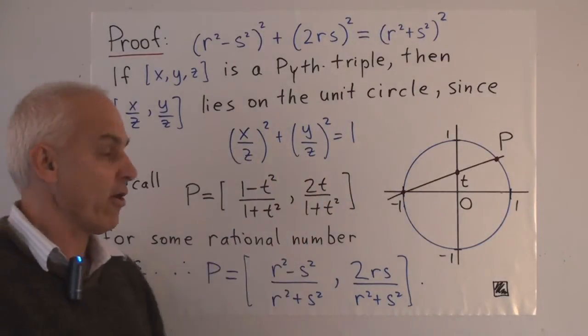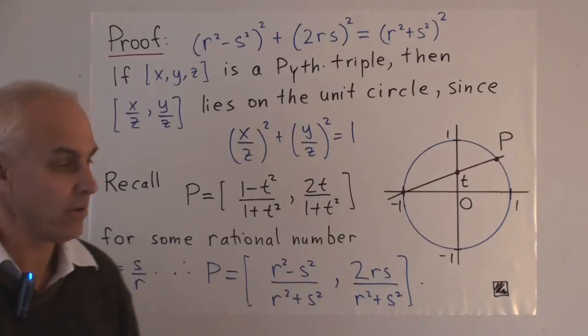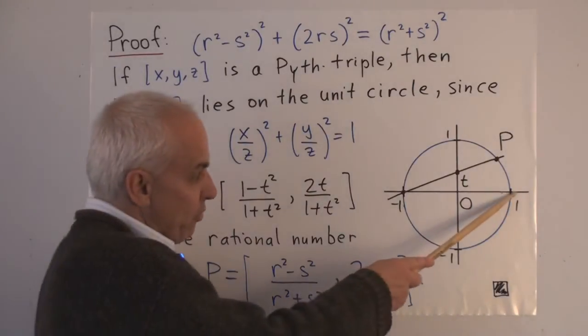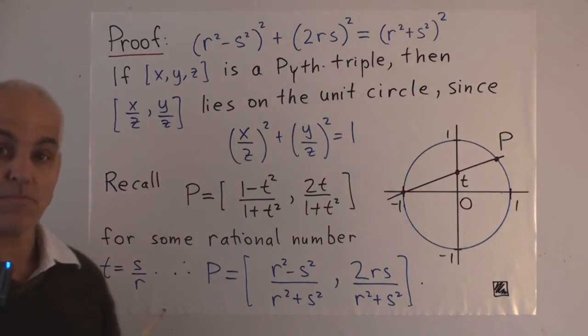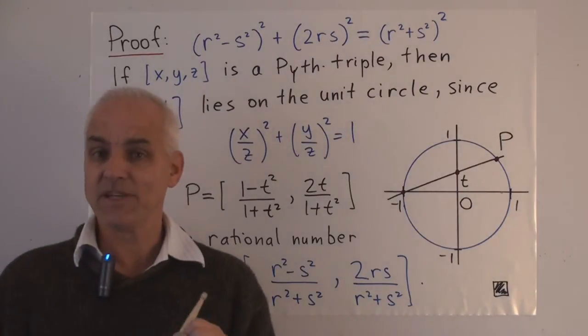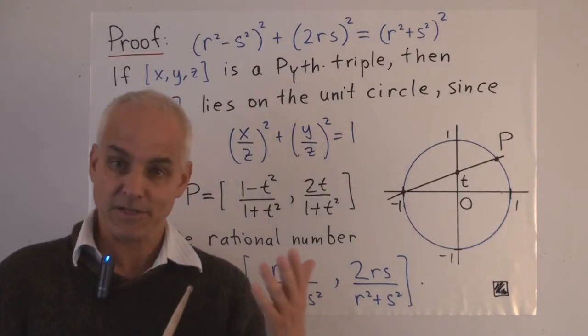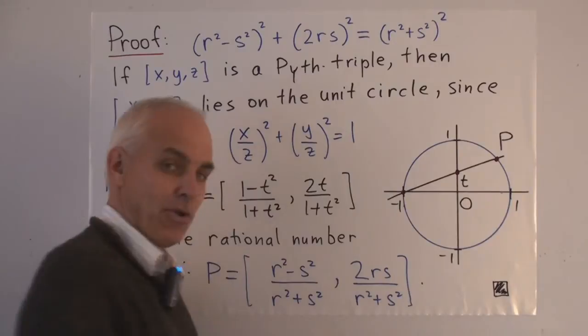And that means that this pair of numbers represents a point lying on the unit circle. In fact, it's got to be in this portion of the unit circle because both of these numbers in here are positive. And remember that in a previous video called Parametrizing the Circle, we've established how to parametrize the points on a circle.